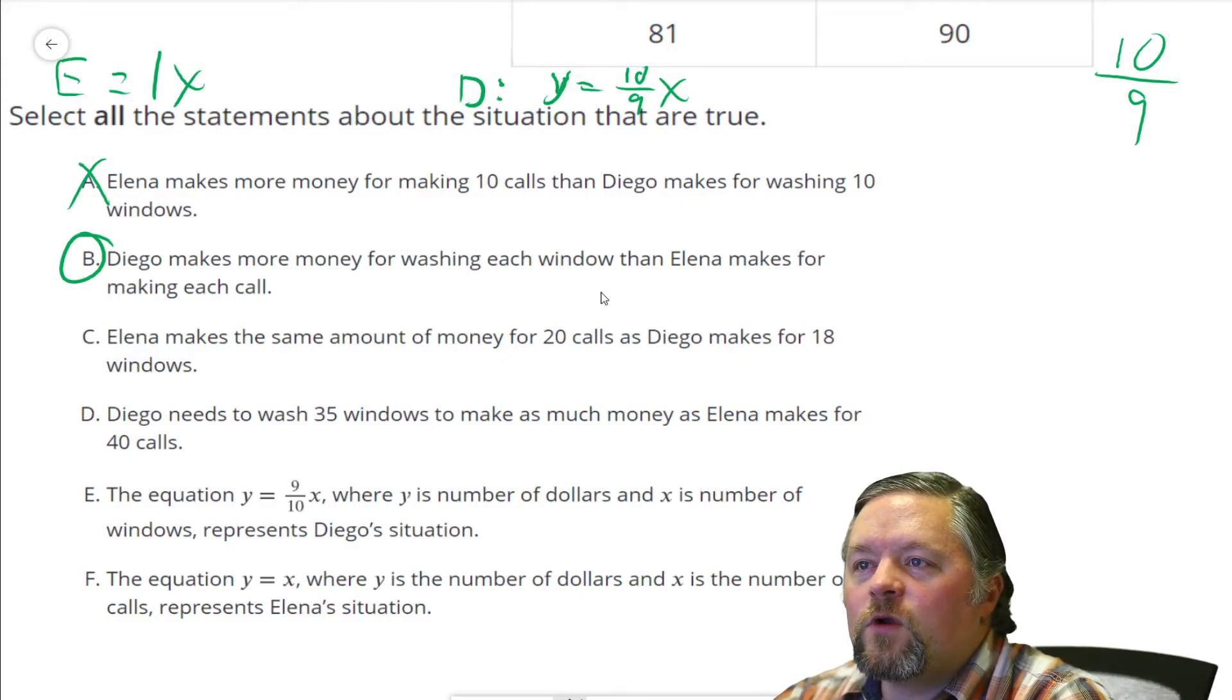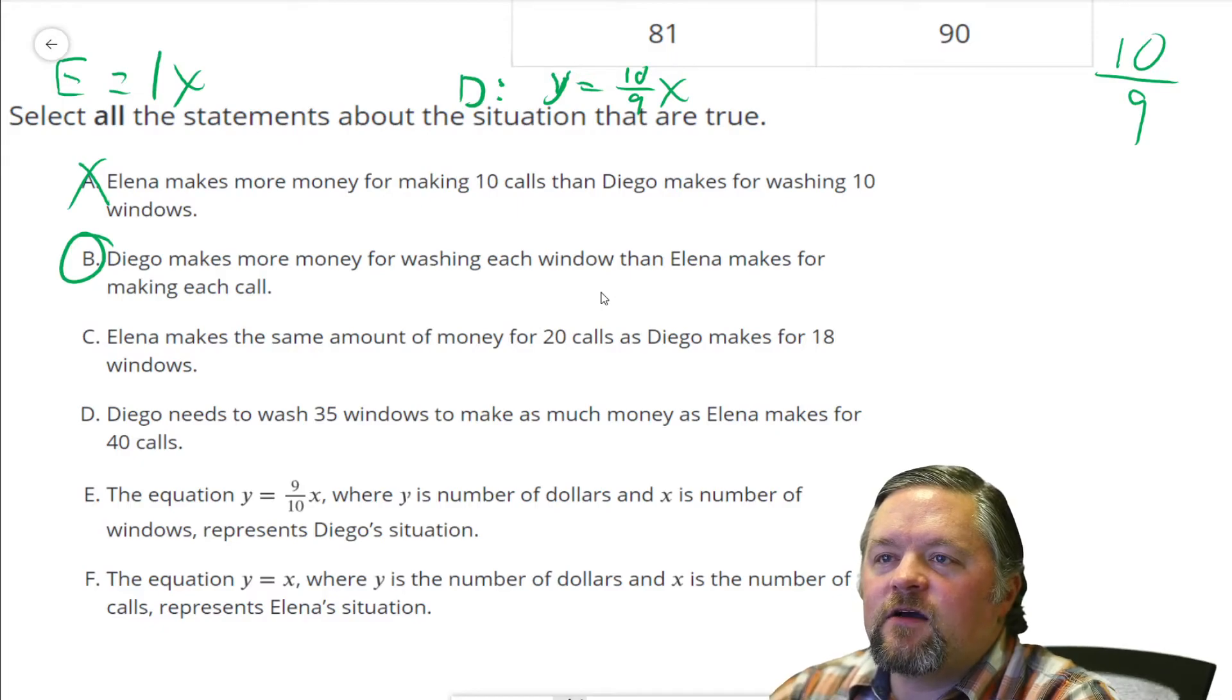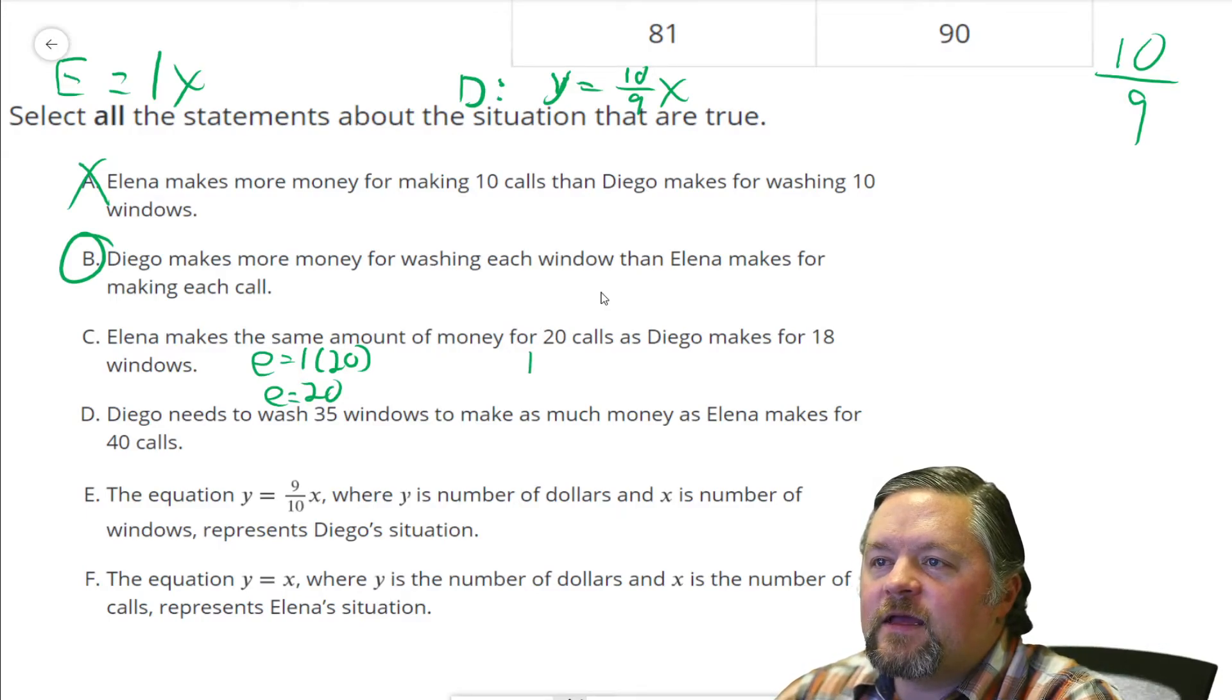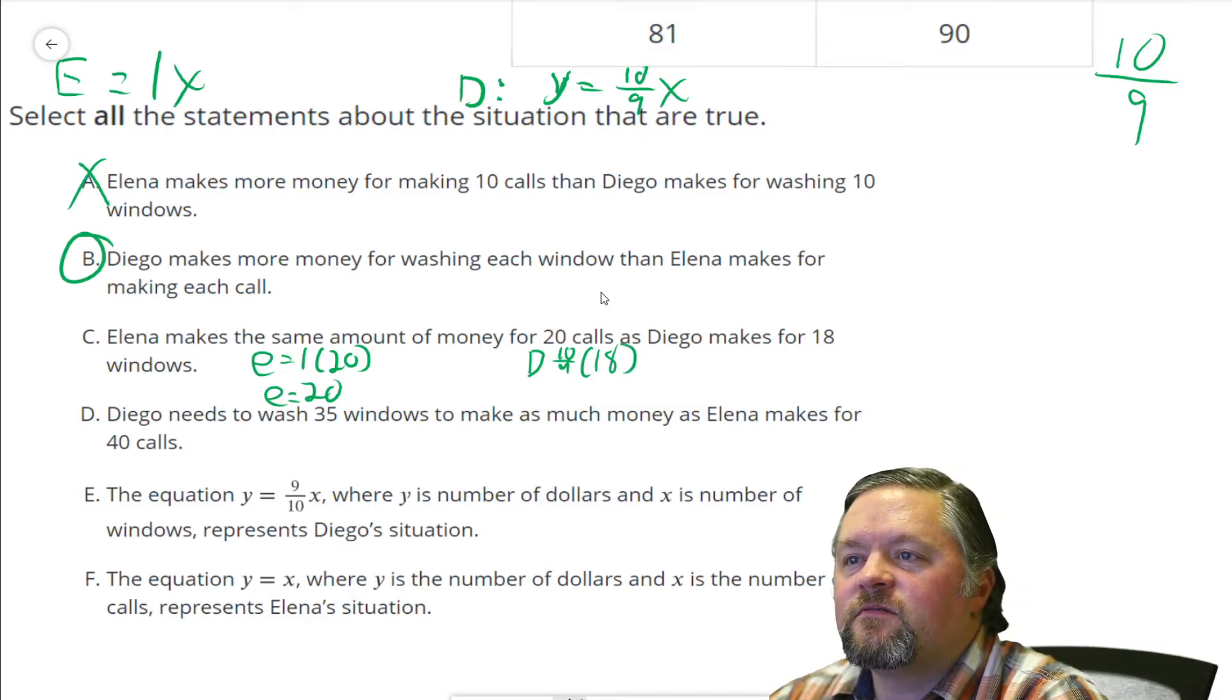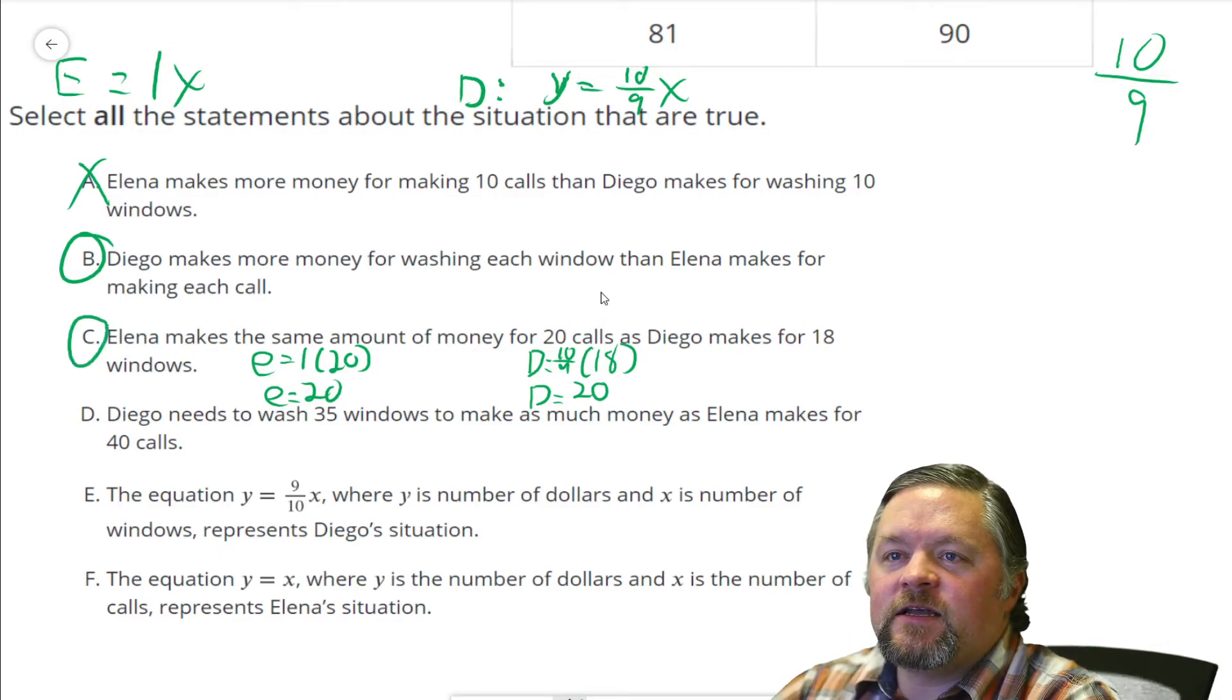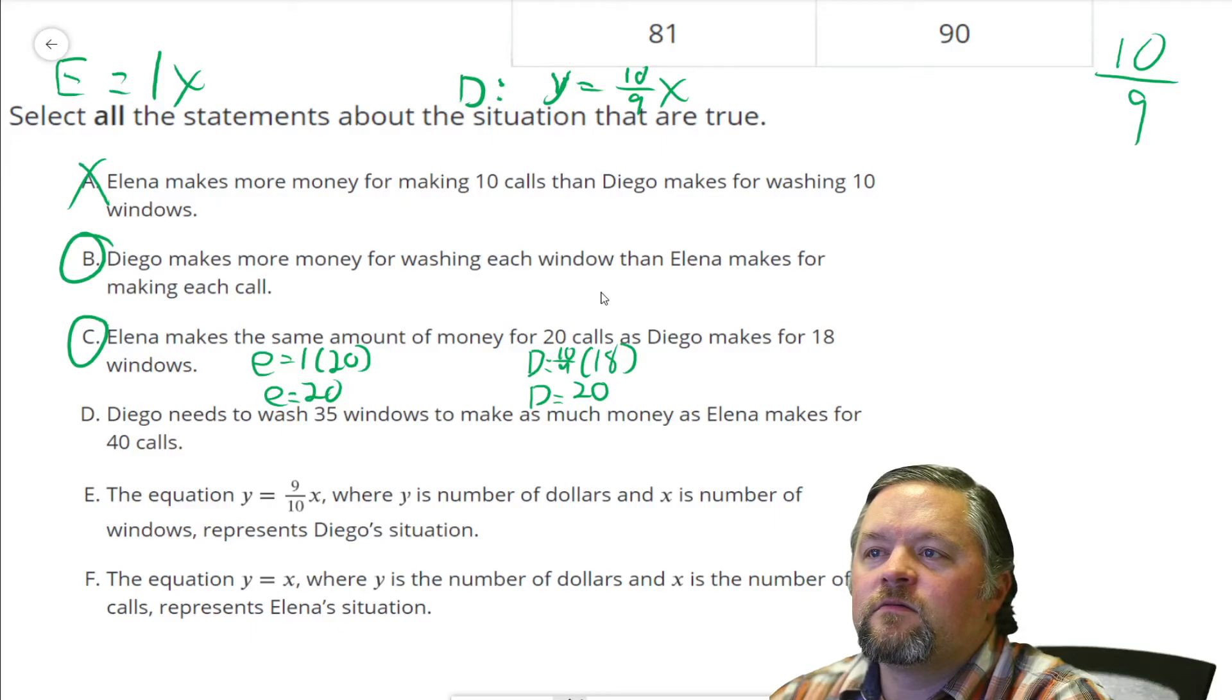Okay, next. Elena makes the same amount of money for 20 calls that Diego makes for 18 windows. Ooh, this one's a little bit tricky. So Elena makes 20 calls. That's E equals 1 times 20. So Elena makes $20. Diego makes 10/9ths times 18 calls. So he gets 1 and a 9th each. 10/9ths times 18 would be 180/9ths. 180 divided by 9 is 20. They make the same amount of money? Yes, they do. They both make $20.